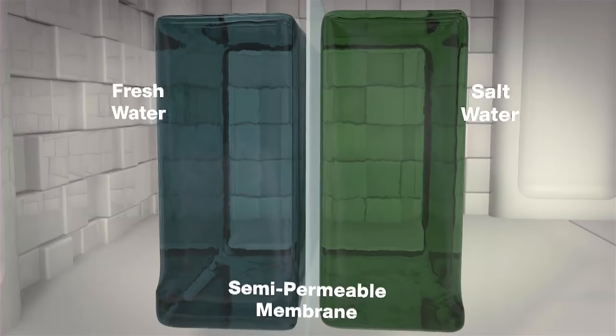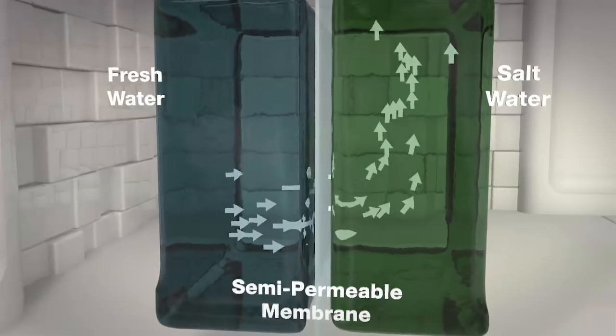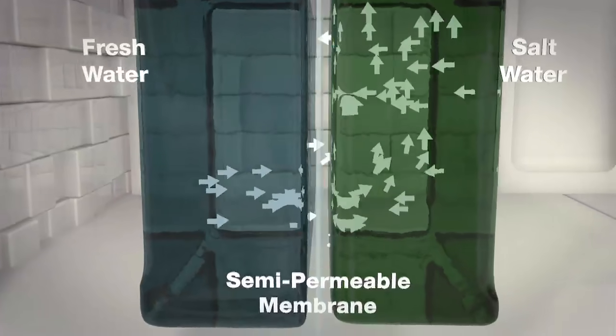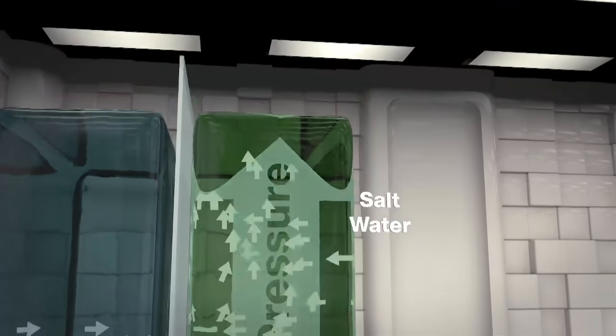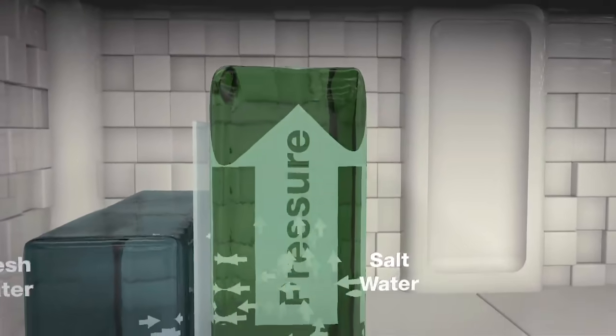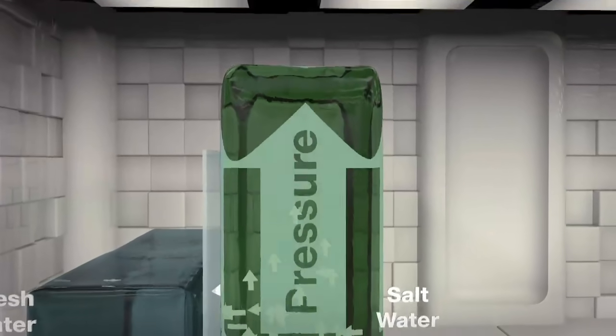This membrane allows fresh water to pass while remaining impermeable to salts, so the fresh water is drawn through the membrane into the saltwater side, equalizing the difference in salinity and raising the pressure in the saltwater tank.